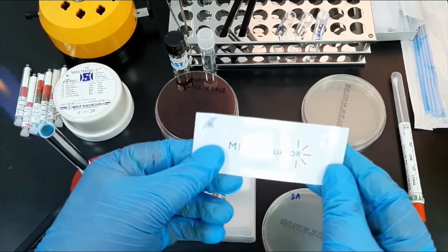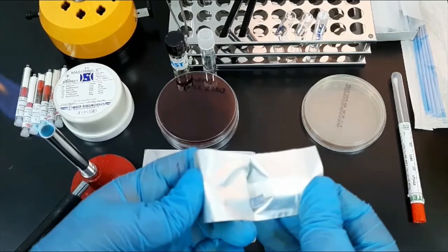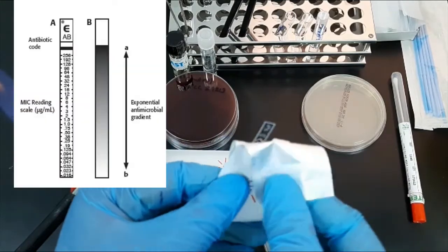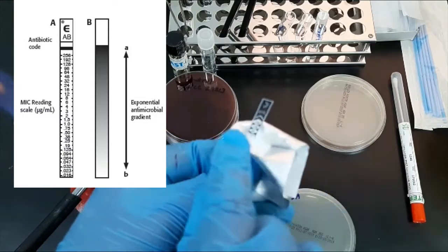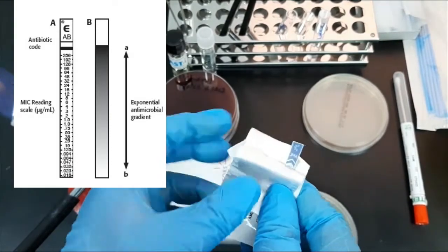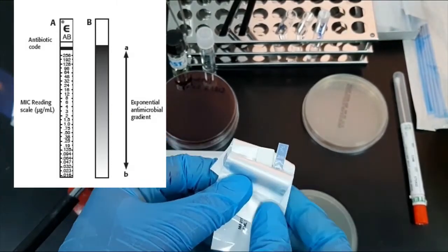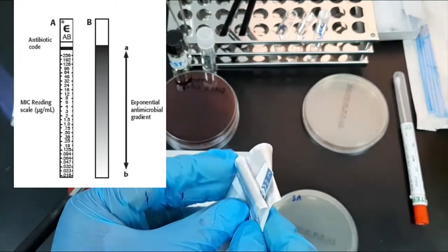Next, open the E-test packet and remove the strip. One side of the strip shows the MIC scale in microgram per ml and a code that identifies the antimicrobial agent. The other side, which shows in blue color, holds the antibiotic with the concentration maximum at the top and minimum in the lower part of the strip.